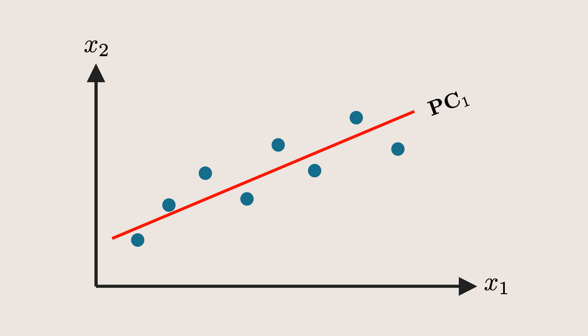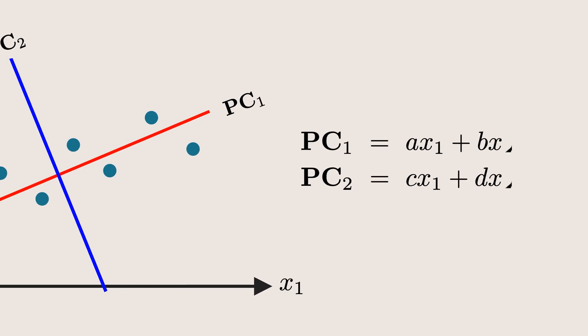There will also be a second axis, PC2, which is always perpendicular to PC1. We will discuss later how exactly we compute this. But for now, just understand that PC1 and PC2 are new axis, formed as linear combination of the original features.